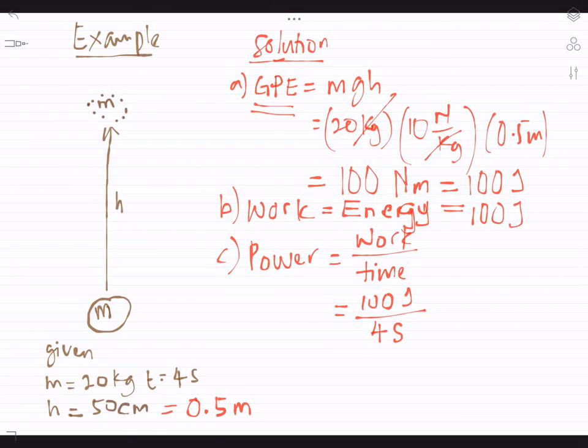And then the next question is: what is the power used? Power equals work over time. So we have 100 joules here divided by 4 seconds, the time given in the question. So the answer is 25 joules per second. So that is the answer and how to solve it.